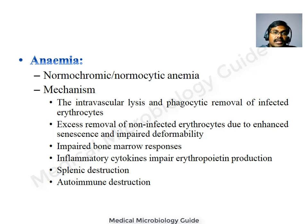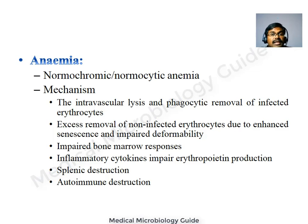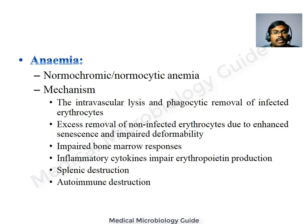Anemia is an important complication of chronic malaria — a normocytic normochromic type. It is due to intravascular hemolysis of infected RBCs and destruction of RBCs in the spleen. There can also be excessive removal of non-infected erythrocytes due to enhanced senescence or impaired deformability. Cytokines impair erythropoietin production, decreasing RBC production in bone marrow. Autoimmune destruction of RBCs is also proposed as a mechanism.